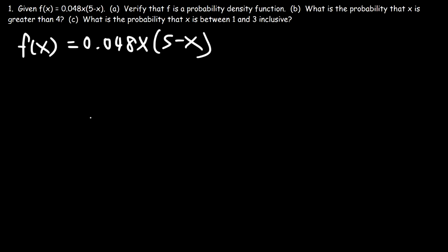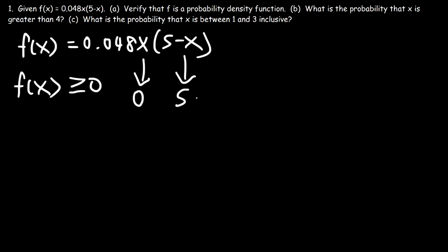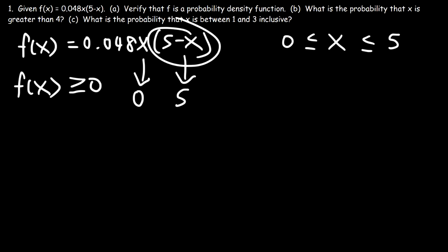If f is a probability density function it has to be greater than or equal to 0 — it can't be negative. Notice that when x is 0 the function equals 0, and also when x is 5. So x has to be between 0 and 5. If x is 6, (5 minus 6) gives a negative result, and if x is negative 1, that also gives a negative result. So x must be between 0 and 5.